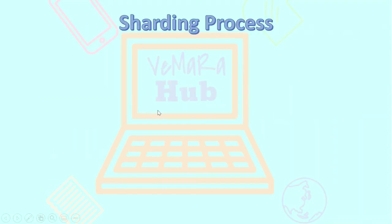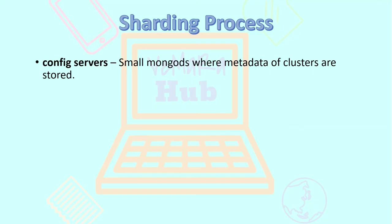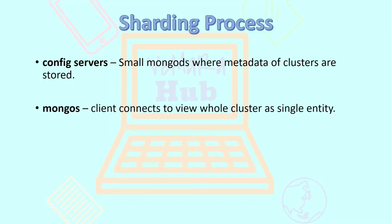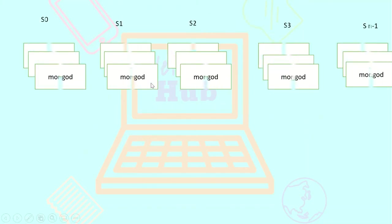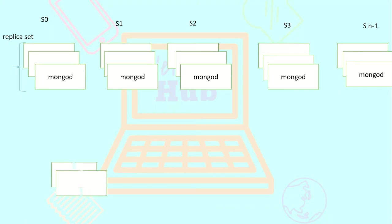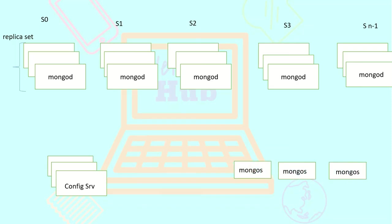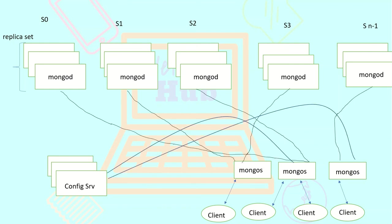A basic shard key example would be either using underscore id as your shard key, or a compound key like a field of 'company' and 'date' together. In a sharded environment there will be a config server, which are small mongod instances where the metadata of the clusters are stored. The balancer, which splits and migrates the chunks, is also present in this config server. We'll also have mongos instances, which are client connections to view the whole cluster as a single entity. All users connect to the mongos interface to access the sharded environment, and then there are multiple mongod instances — the shards — which process and store the data. In an ideal environment, each of these shards will have a replica set.